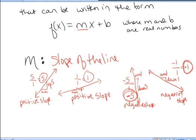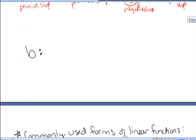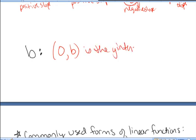Equations that are linear functions can be written in the form f of x equals mx plus b. We've discovered that m represents the slope of the line — a number that describes the steepness. b is another number, and b represents the y-intercept of the line. The point (0, b) is the y-intercept — it's the point on the graph that crosses the y-axis, and b is the height of that point.